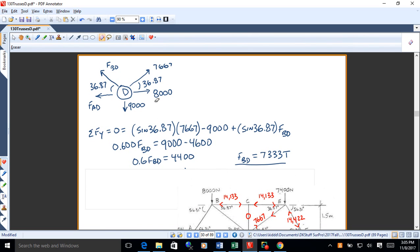All right, so here we are, sum of FY. We got sine 36.87 times 7667. That's up. 9,000 down. And then as I have it drawn there, FBD times sine of 36.87. And from there, it's just a matter of solving. So we get to that equation first. Both this force and FBD are up. And then the 9,000 is down. So go ahead and get 0.6 FBD is 4400. So FBD is 7333 tension.